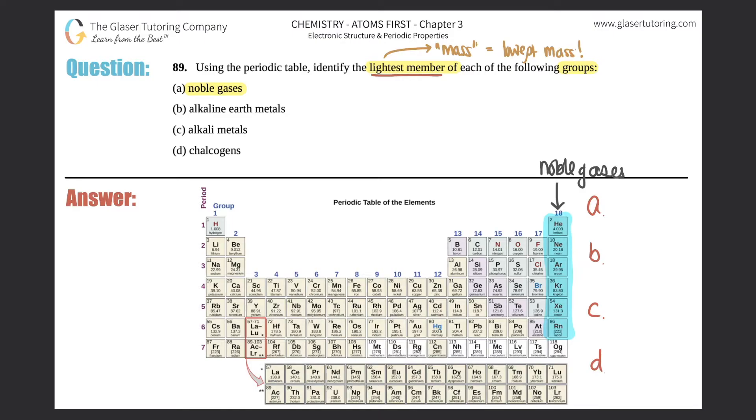I am not including oganesson because this element has not been classified to its fullest extent. They're still testing this element out and can't classify it as a noble gas yet. Which one is the lightest? It's going to have the lowest mass. As you go down the periodic table, the masses get bigger because they have more protons and the radius expands. The lightest one would be helium.